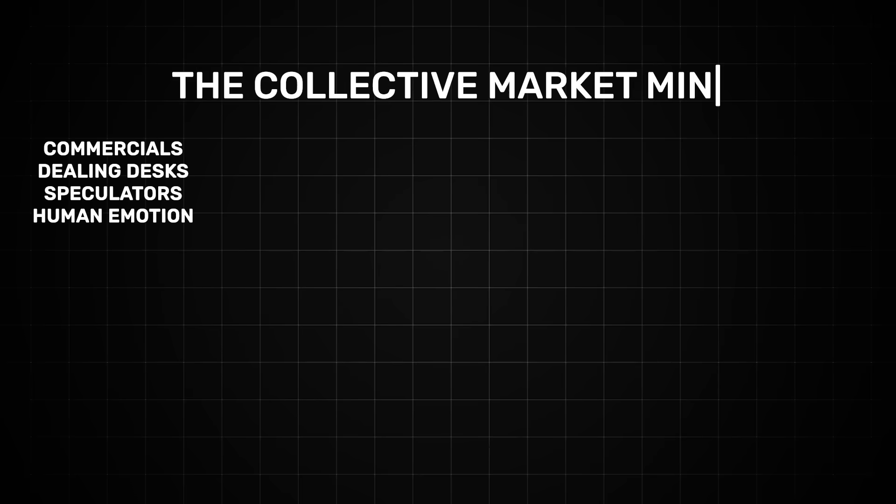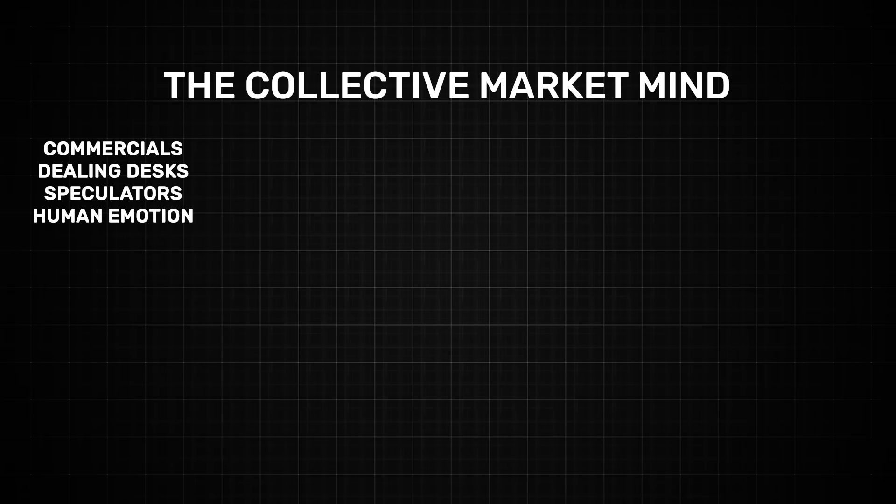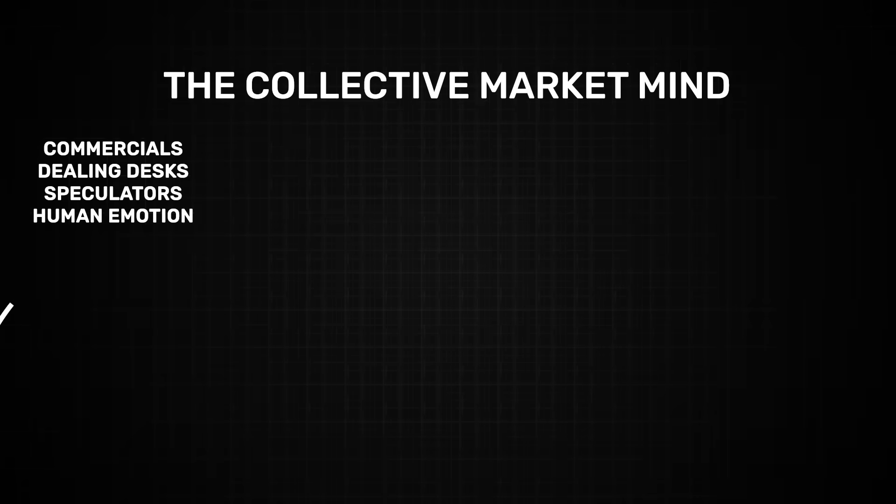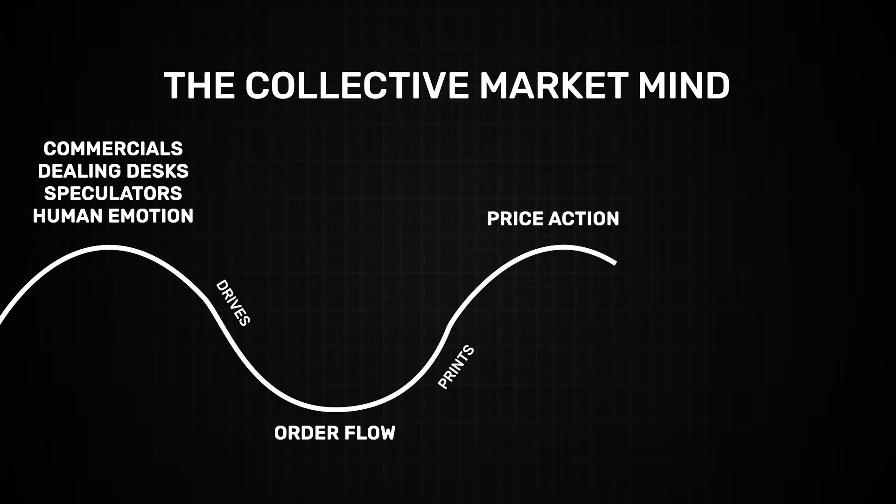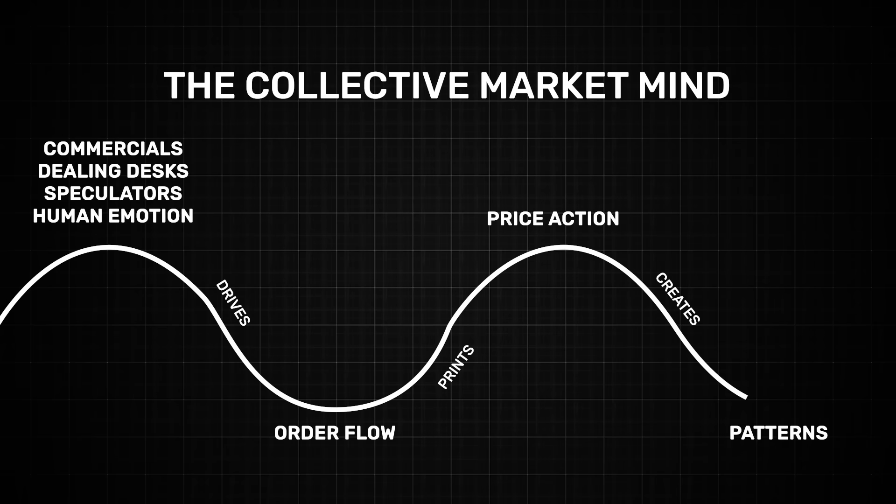Well, you've got millions of market participants putting millions of orders through the market for a million different reasons. All of this behavior and participation is what drives the order flow that is put through the market. And that order flow is what prints price action on our charts. And that price action creates patterns. These patterns repeat themselves over and over time and time again.